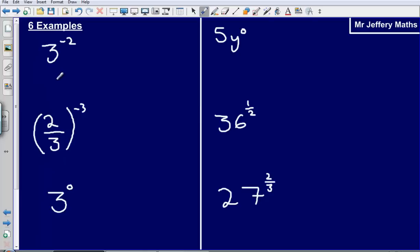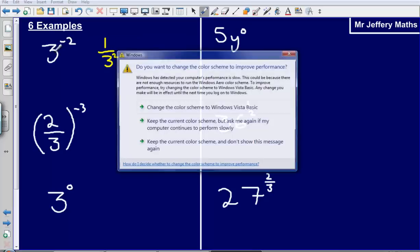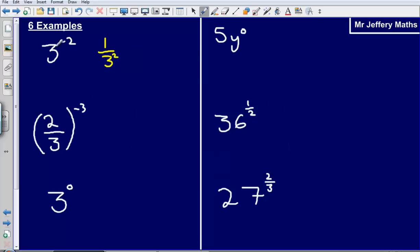Okay, so six examples using these three laws. First one I've got 3 to the negative 2. So first off, I'm going to take the reciprocal of 3. The reciprocal of 3 gives us 1 over 3. When I do that it becomes a positive power, so that negative 2 turns into a positive 2 when we take the reciprocal. So 3 to the negative 2 is going to give us 1 over 3 squared and so we get 1 ninth.